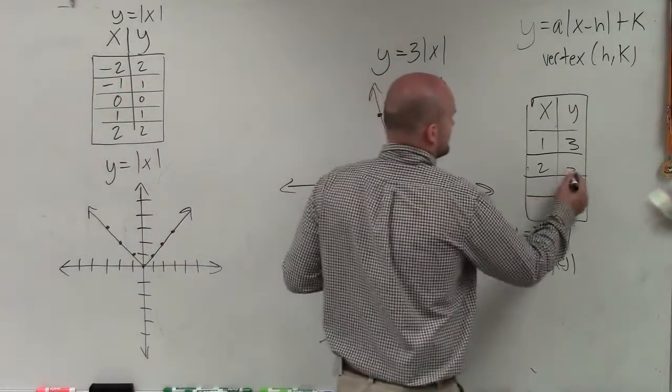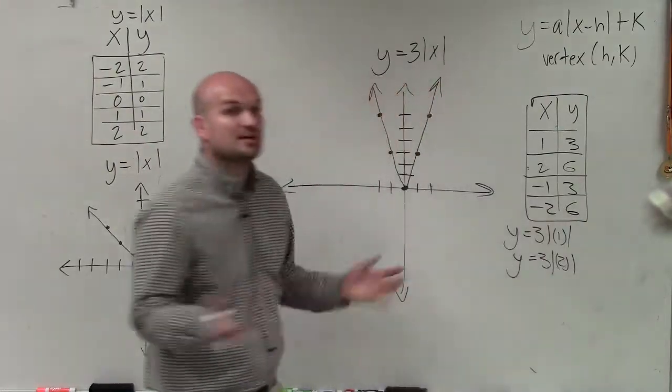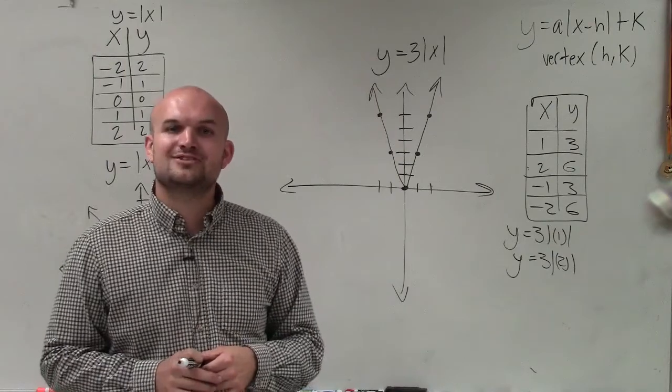Oh, I didn't write in 2 and 6. So therefore, negative 1 is 3 and negative 2 is 6. All right? But there you go, ladies and gentlemen. That is how you graph an absolute value equation with a horizontal compression. Thanks.